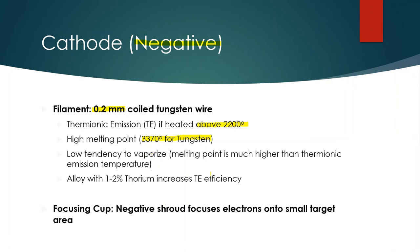We can heat the filaments high enough to cause the electrons to boil off away from the cathode filament. Some boil off while others cool down in a cyclical process, creating a cloud — a space charge — of electrons around the coiled tungsten wire. The coiled tungsten wire has a low tendency to vaporize because its melting point exceeds the thermionic emission temperature. In some cases, filaments are mixed with one to two percent thorium, which increases thermionic emission efficiency. The focusing cup, usually made of nickel, has a strong negative charge that focuses the electrons into a small target area.